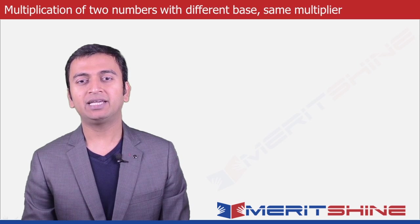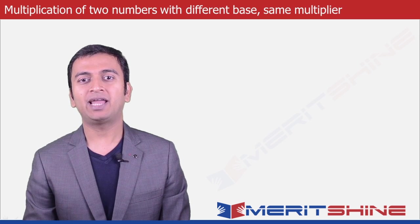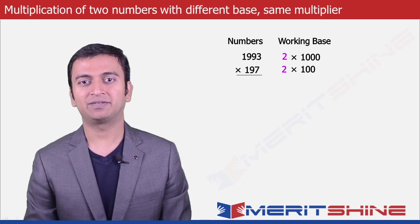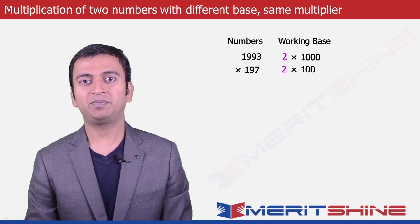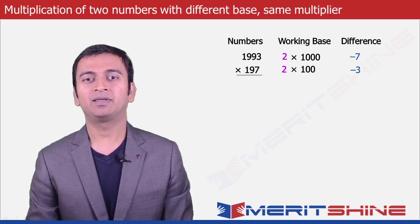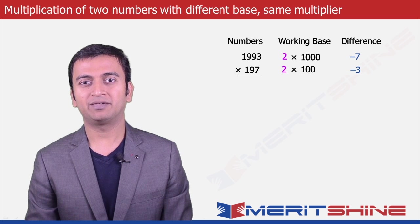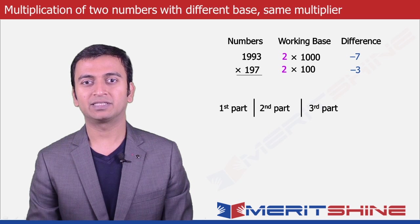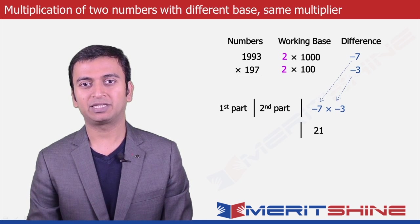Let us now take 1993 into 197 as an example. Here again our working bases would be 2 into 1000 and 2 into 100 respectively, and our differences would be minus 7 and minus 3. Please note the multiplier again would be 2. We can proceed to write down our answer in 3 parts. Let us begin with the third part, which would be the product of the differences: minus 3 into minus 7, giving us plus 21.